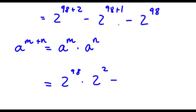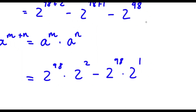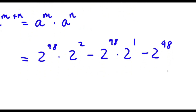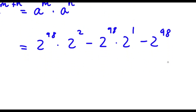Now I have minus 2 to the power of 98 plus 1, which equals 2 to the power of 98 times 2 to the power of 1, and 2 to the power of 98 we're simply going to leave by itself. From here you can see that all three of these terms have 2 to the power of 98 in them.